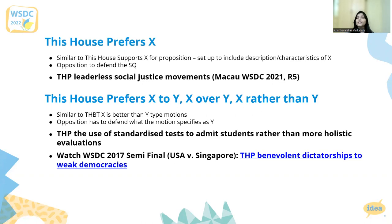Second, we have 'this house prefers x to y,' 'x over y,' or 'x rather than y.' It's quite similar to 'this house believes that x is better than y' motions discussed earlier. Opposition has to defend what the motion already specifies as y. So in the motion 'this house prefers the use of standardized tests to admit students rather than more holistic evaluations,' prop has to defend SATs, ACTs, IIT Madras entrance exams, while opposition has to defend holistic evaluations as they happen now — an overall consideration of academic, co-curricular and extracurricular activities, plus potentially performance on an interview and essay about life experiences, because that's often how holistic evaluations for university admission are conducted.